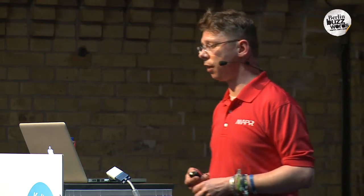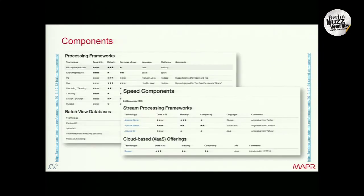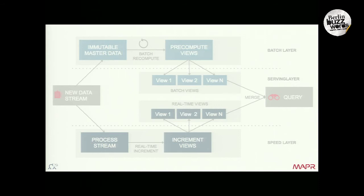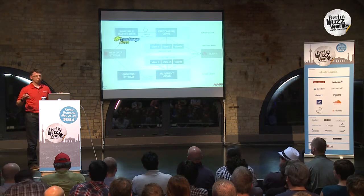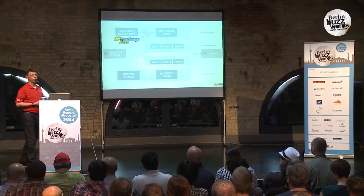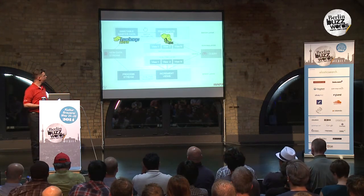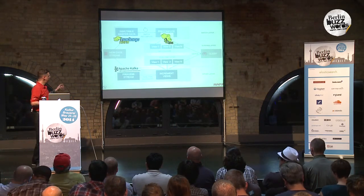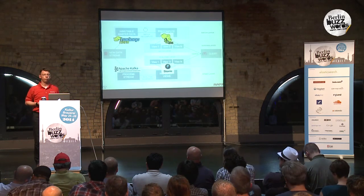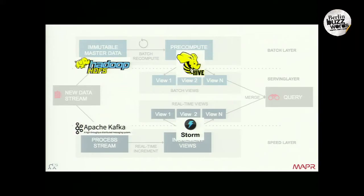Coming to implementation of the Lambda architecture — you've got a deadline, you've got people, and you want to implement that. One of the things we're doing on that advocacy website is listing the components you could use for realizing certain layers. A recurring pattern is: for the immutable master dataset, HDFS is used; for the batch layer, quite often Hive or Pig and Hive; in the speed layer, you would typically see Kafka in front of Storm; and the serving layer would, for example, be realized with HBase, where you merge both the batch view and the real-time view.